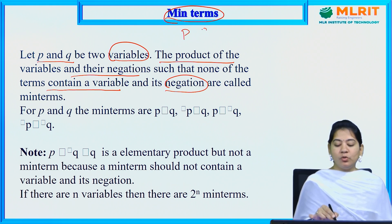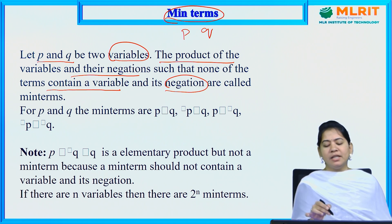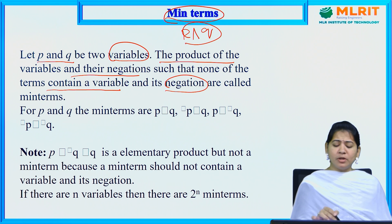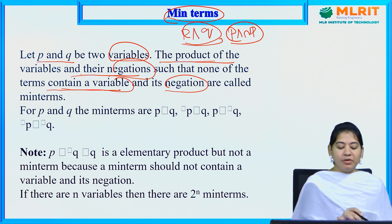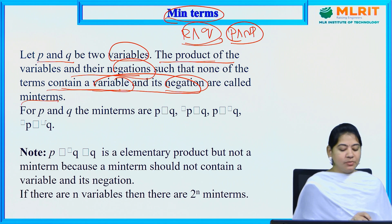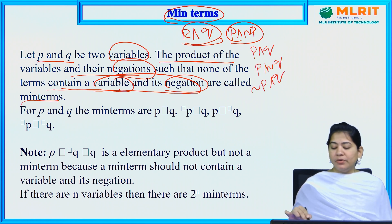For two variables P and Q, the product of the variables and their negations — where none of the terms contains a variable and its negation — gives us the min terms. For P and Q, the min terms are: P and Q, P and ¬Q, ¬P and Q, and ¬P and ¬Q. These four are all called min terms.